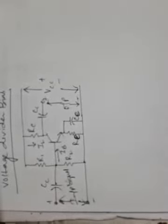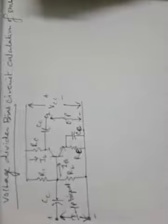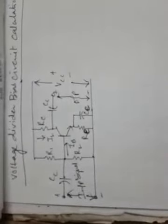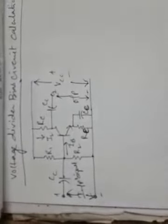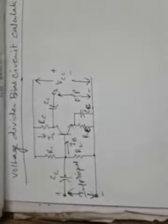Now let us see the third part — calculation of stability factor using the voltage divider bias circuit. This is the basic voltage divider bias circuit and it is the most commonly used bias circuit for getting a stable operating point. The resistances R1, R2, RE, and RC and supply voltage VCC provide proper forward bias to the emitter-base junction and reverse bias to the collector-base junction.